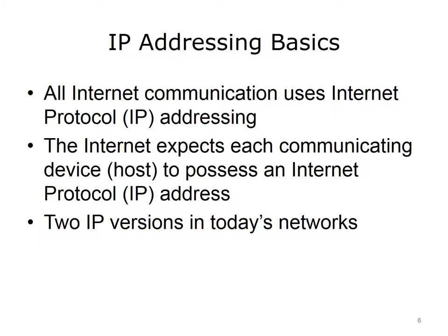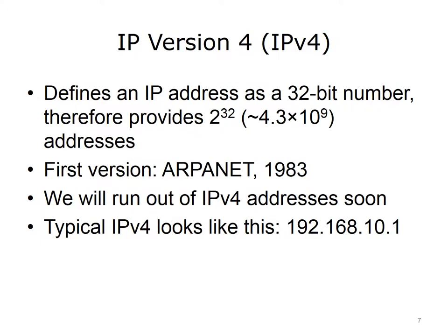Currently, two versions of IP exist. IP version 4 or IPv4 defines an IP address as a 32-bit number and therefore establishes a theoretical limit on the number of available addresses at 2 to the 32nd power, or approximately 4.3 times 10 to the 9th power addresses. The first version of IPv4 was deployed for production in the Advanced Research Projects Agency Network, or ARPANET, in 1983. We know that we will run out of 32-bit addresses soon; however, IPv4 is still in use.